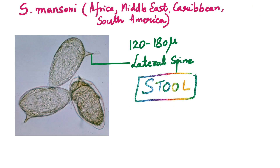Schistosoma mansoni is the most widespread schistosome, reported from Africa, several Middle East countries, the West Indies (Caribbean), and South America. The eggs are almost similar in size to Schistosoma haematobium — elongated, ellipsoidal, non-operculated — but they have a lateral spine. Lateral-spined eggs in stool: think Schistosoma mansoni.